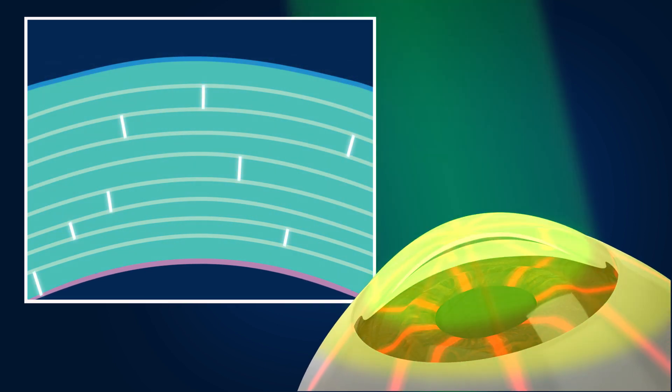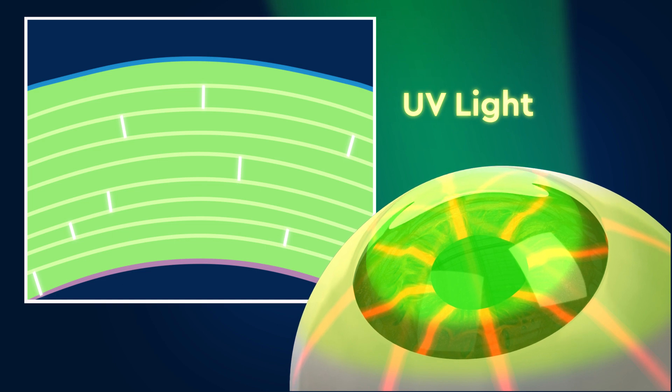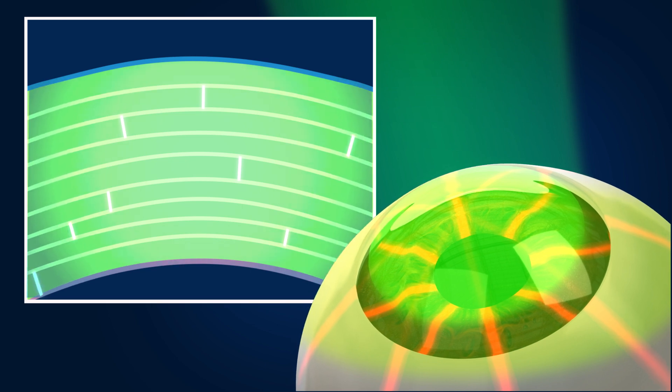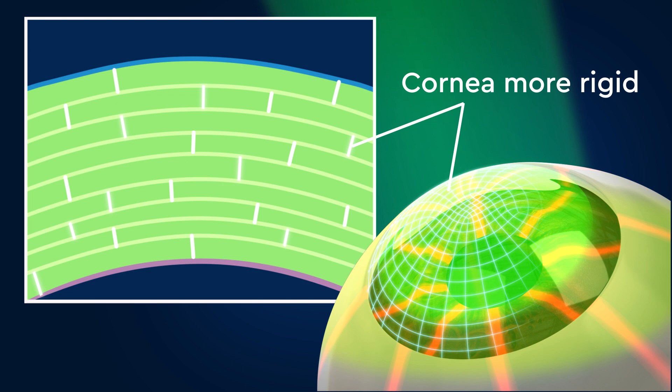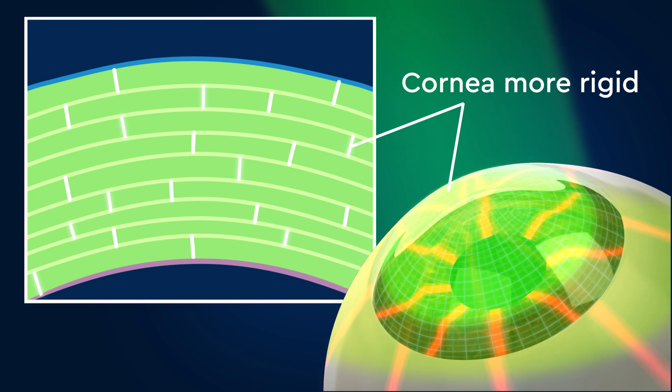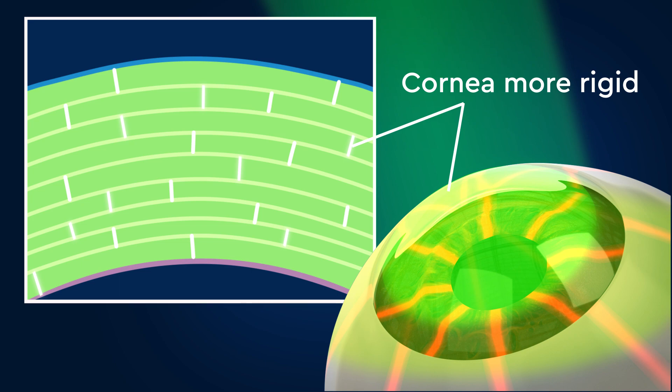Next, your surgeon will shine a special UV light on your cornea. This light and the vitamins absorbed from the eye drops perform a chemical reaction that strengthens the collagen bonds in the stroma, making the cornea more rigid so it will be locked into its current shape and will not continue to become more cone-shaped.